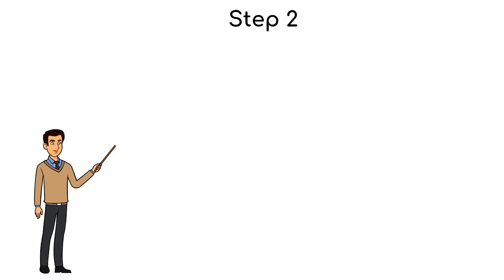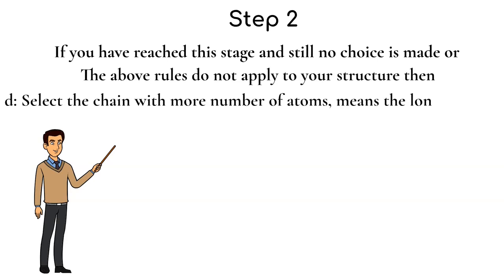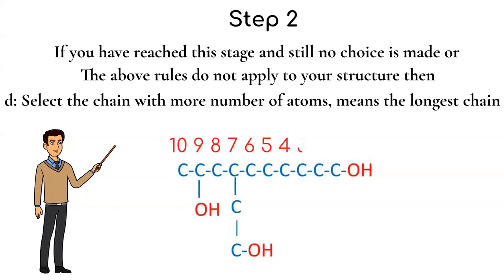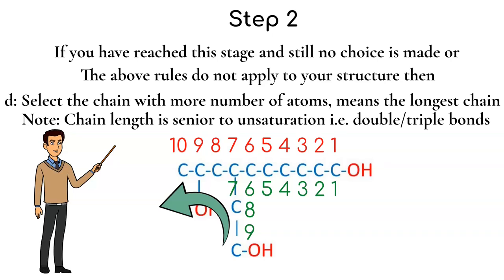If you have reached this stage and still no choice is made, or the above criterias do not apply, then follow criteria D: select the chain with more number of atoms — that is, select the longest chain. For example, this compound has three chains: chain one contains ten carbons, chain two has nine carbons, and the third chain contains only six carbons. So the chain with ten carbons is selected as the parent chain, and the root word used is 'deca'.